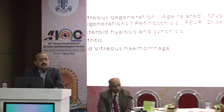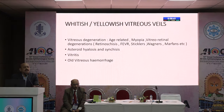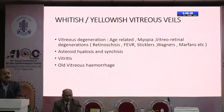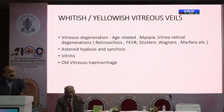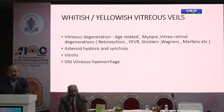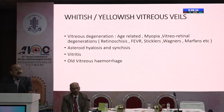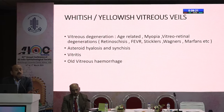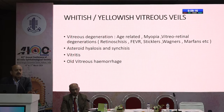There is a lot of overlap between these topics. We are dealing with whitish or yellowish opacities in the vitreous and the signs seen on fundus examination. It could be vitreous degeneration — either a standalone age-related degeneration or associated with other ocular pathology like retinoschisis, FEVR, or Stickler syndrome. It could be another kind of retinal degeneration like asteroid hyalosis or synchisis scintillans, vitreous inflammation such as vitritis, or sometimes a white spot can be an old vitreous hemorrhage.